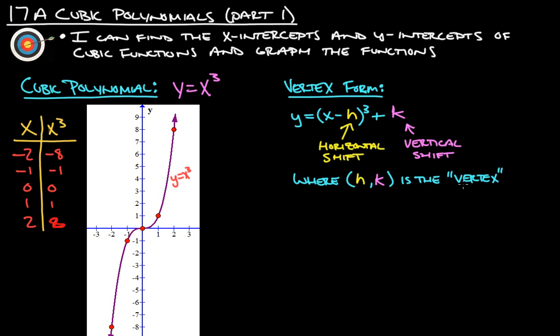So this here, the h and the k is the vertex with the quotes around it, because it's not truly the vertex, but it's this point right here. So this is our vertex form, which is going to come in really handy throughout the rest of this. So you're going to want to have this vertex form and know that the h and the k is the new little vertex and it's our vertical shift, horizontal shift.